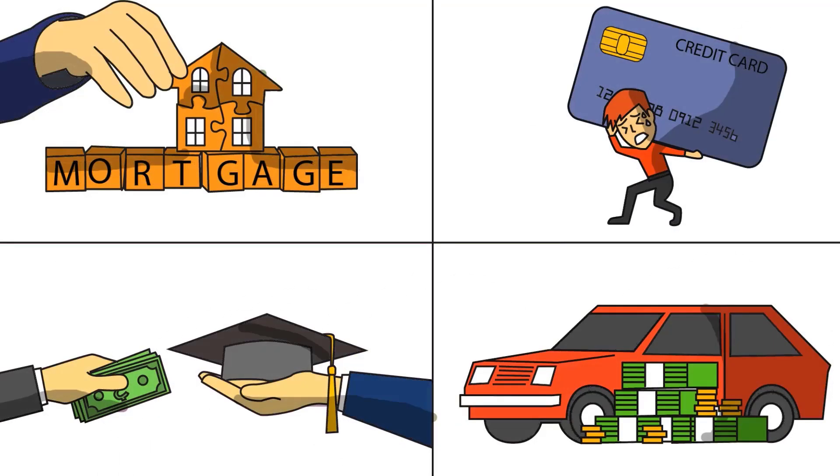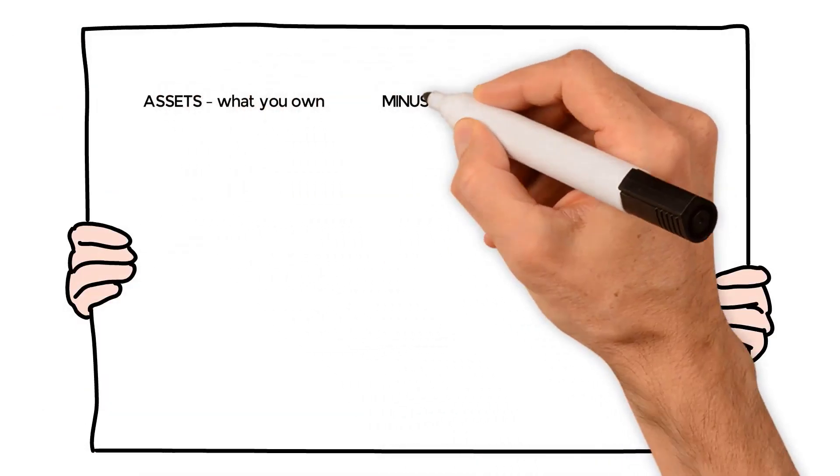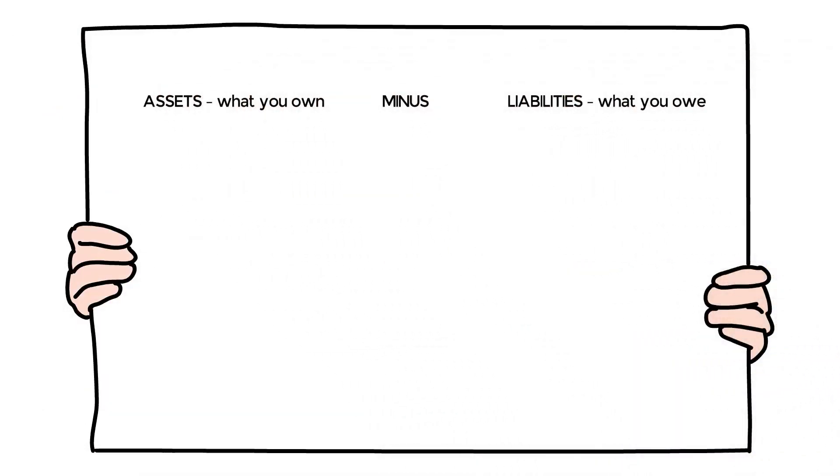In this example, I'll show you how to calculate your net worth. Assets — what you own — minus liabilities — what you owe.